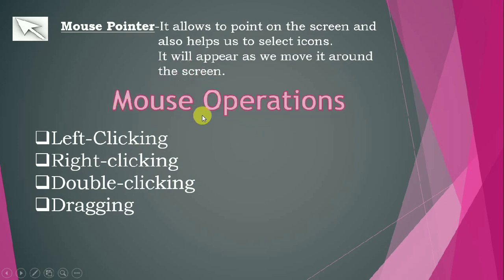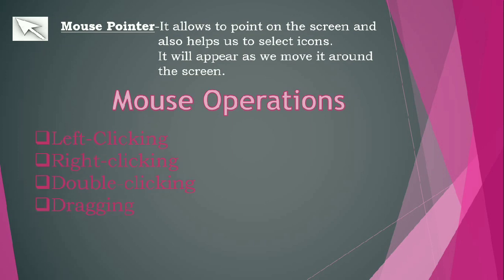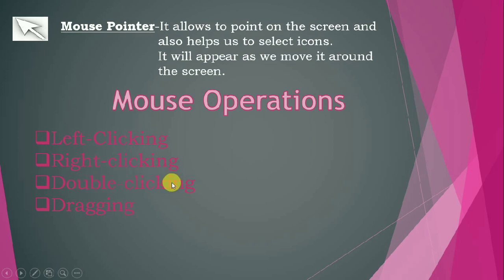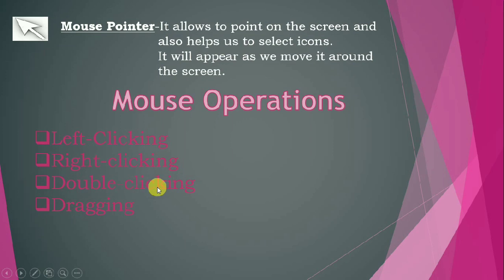There are many operations of the mouse: left clicking, right clicking, double clicking, and dragging. Left clicking is done with the left mouse button. Right clicking is done with the right mouse button. Double clicking means clicking the left button of the mouse two times in order to open an item. Understand the difference: left clicking only helps us to select an icon or any item, whereas double clicking any icon will help us to open it.